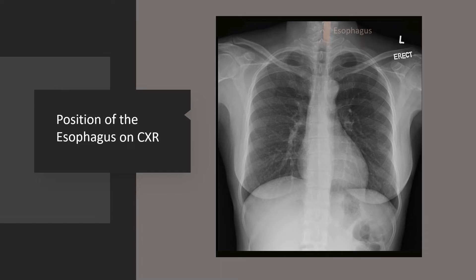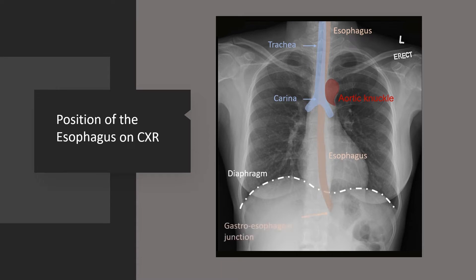Typically, the esophagus passes vertically over and slightly to the left of the trachea. The esophagus is then positioned adjacent and immediately to the right of the aortic knuckle. The esophagus then passes vertically down in the midline below the diaphragm and past the gastroesophageal junction into the stomach.